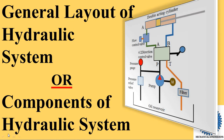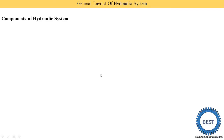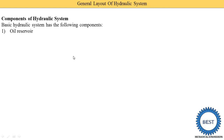In this video, I discuss the general layout of hydraulic systems and components used in a hydraulic system. In a hydraulic system, various components are used. The basic hydraulic system has the following components. The first component is the oil reservoir. Here we go with the animation so you can easily understand it.